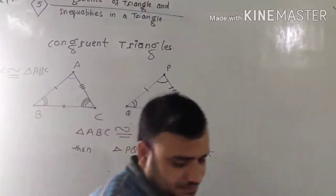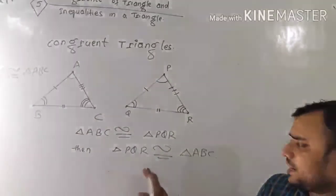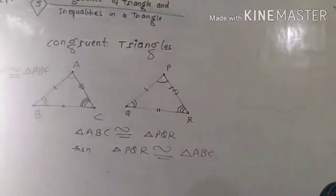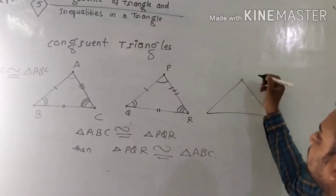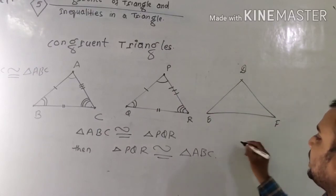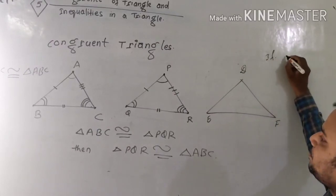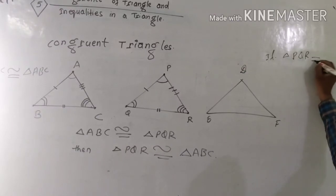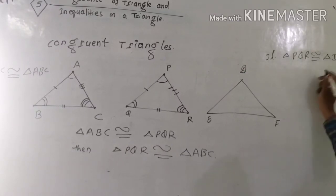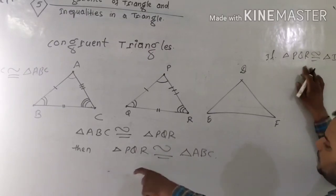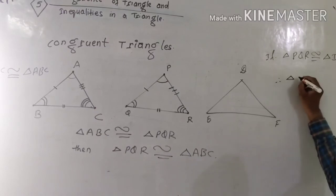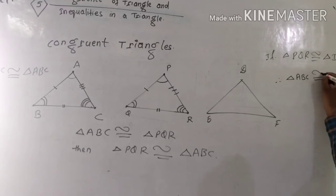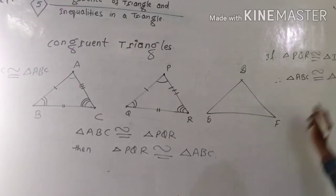And if triangle ABC is congruent to triangle PQR, and triangle PQR is congruent to triangle DEF, then triangle ABC is also congruent to triangle DEF.